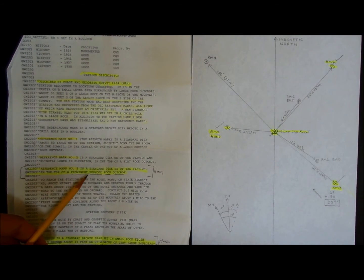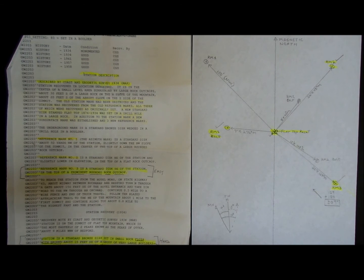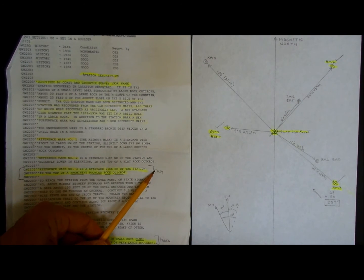If one of these marks is in a prominent rounded rock outcrop, it's going to be above the ground. It's probably not going to be covered with ivy and stuff, and it should be easy to find it.